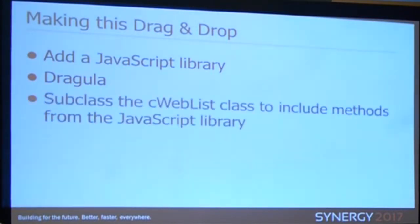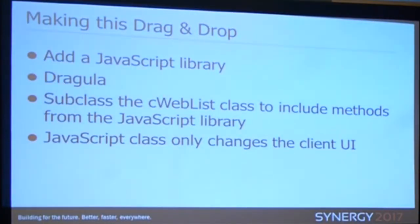So what do we need to do to make this drag and drop? Add the JavaScript library — the Dragula JavaScript library. You then subclass the web list class to include the methods from the JavaScript library. The only thing you need to do in the view is change the class to the new subclass that includes those methods. But remember, the JavaScript library only knows the user interface and not the underlying data, so it will only affect the client UI.